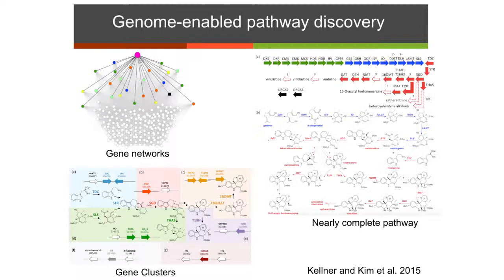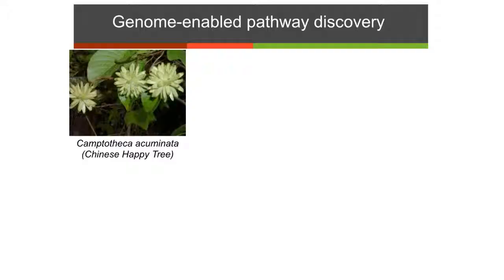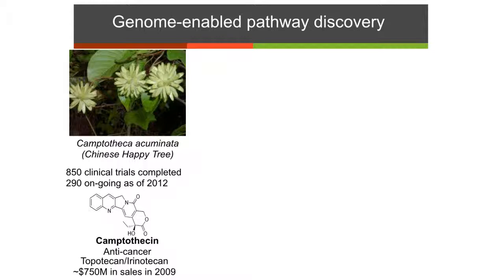In another project, we've been working with Dean De La Pena — another offshoot from our NIH project — on production of camptothecin from Camptotheca acuminata. This is also an anti-cancer drug worth three quarters of a billion dollars. It's actually very toxic itself, so it's made into a derivative for cancer treatment.